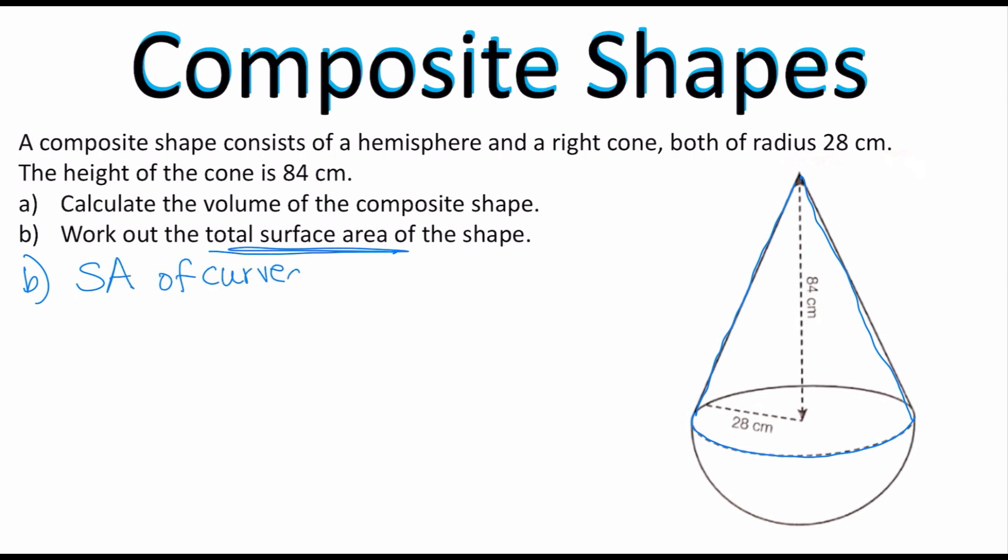So in this case to find the total surface area I'm going to find the surface area of the curved surface of the cone and then I'm going to add it to the surface area of the hemisphere. So this is our goal for this problem.